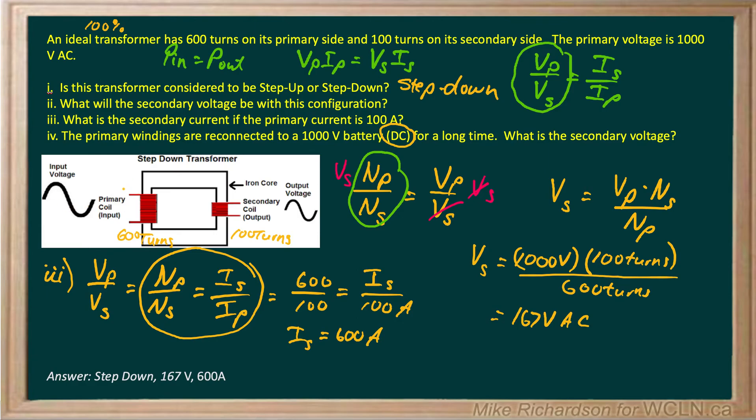If you hook it up to the battery, the current only flows in one direction. So notice it says after a long time. Imagine you close the switch on that battery and what happens is this thing starts to generate a magnetic field that immediately balloons out and passes through the secondary coil. But after a long time that magnetic field just remains stationary. It's like putting a bar magnet in a set of coils and just leaving it there. You're not inducing any EMF.